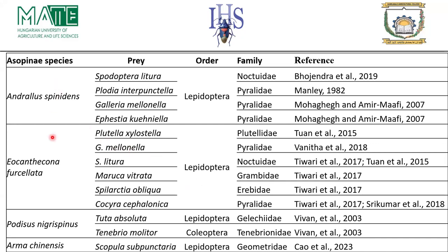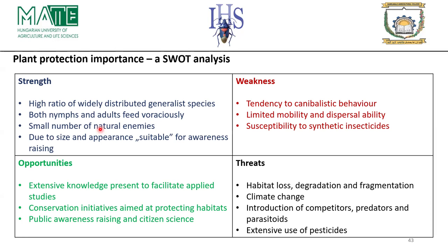Even without European Asopinae specifically, since they belong to the same sub-family they can be reared using those methods. Live prey used in experiments includes target species belonging mainly to Lepidoptera and Coleoptera. As a summary of the plant protection importance discussion, a SWOT analysis can be applied considering strengths, opportunities, weaknesses, and threats of Asopinae as biological control agents.